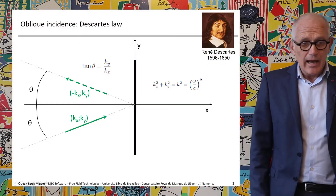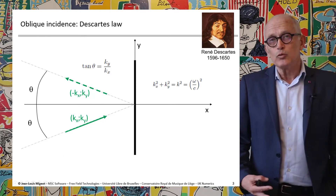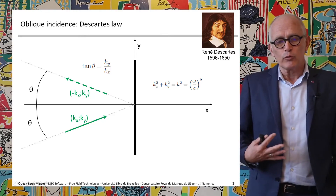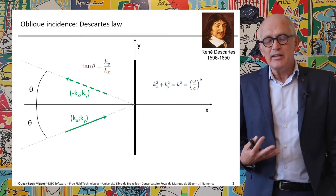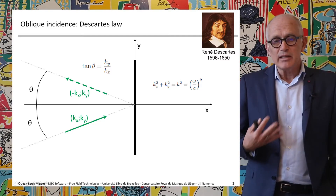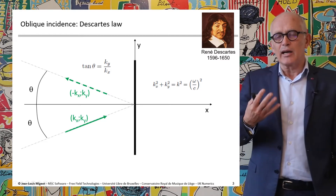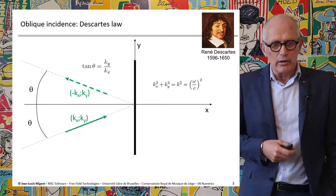We're going to look at a very important and very general law of wave physics which was initially discovered by the French philosopher Descartes. It's called Descartes' law of specular reflection. It basically says that if you have an incident wave impinging on a surface with a certain angle of incidence theta, the reflected wave will have the same angle — its direction changes but the angle theta of both the incident and reflected wave are equal.